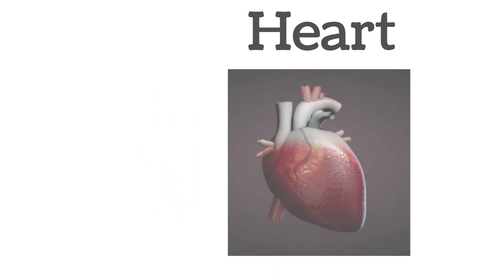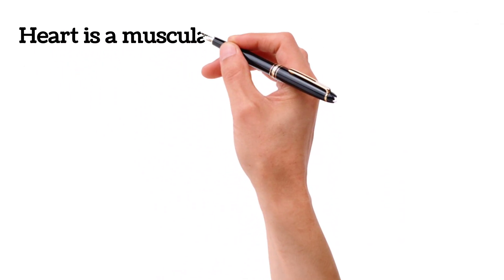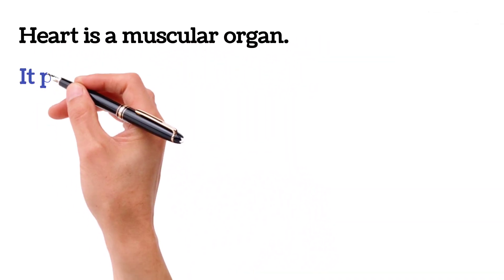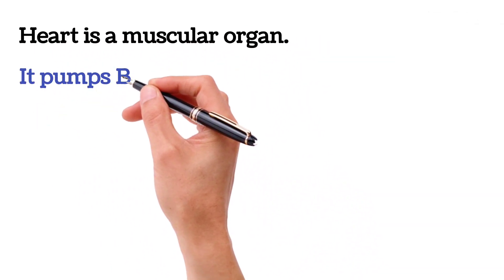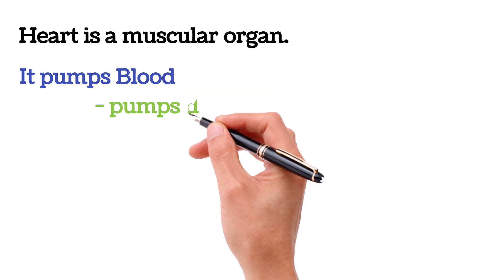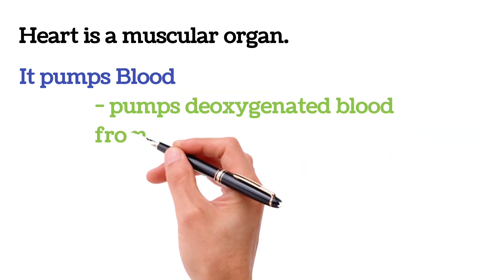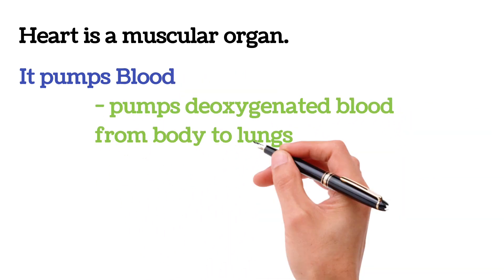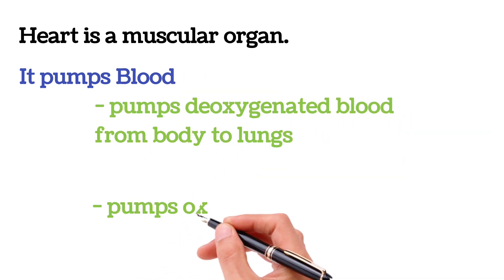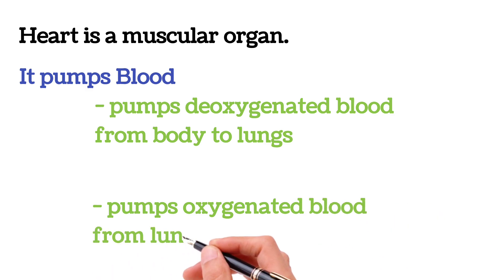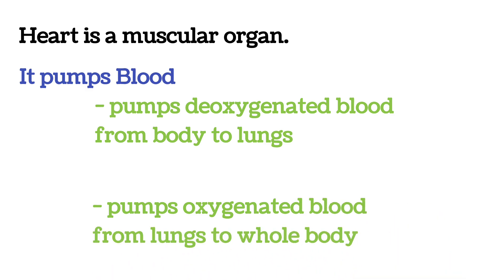Heart. A heart is a muscular organ. It pumps deoxygenated blood from the body to the lungs and oxygenated blood from the lungs to the whole body.